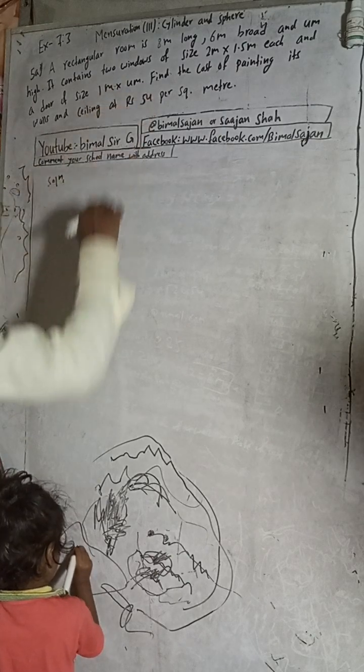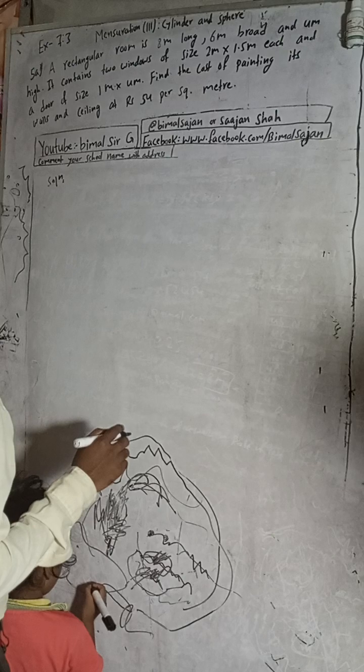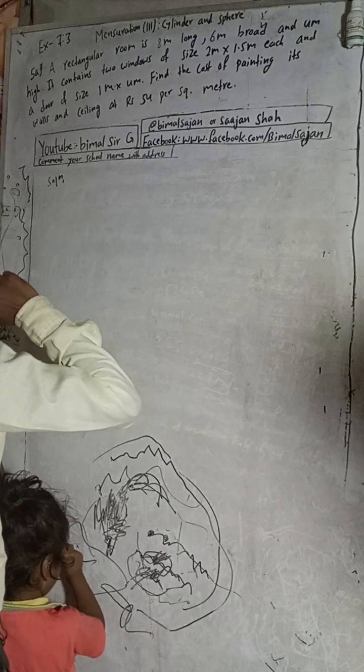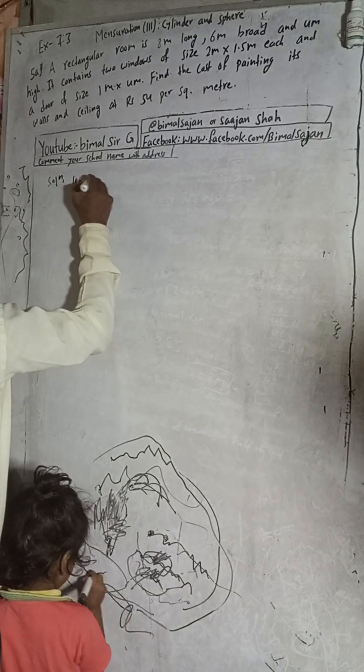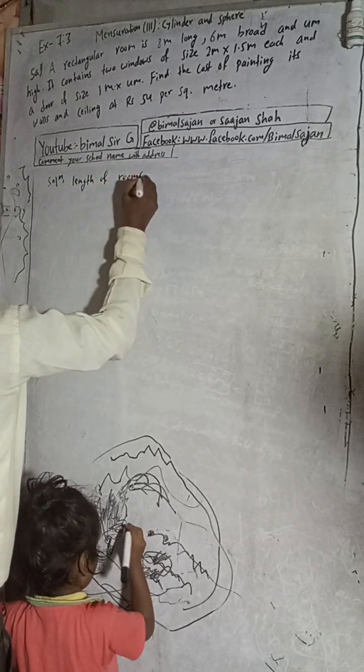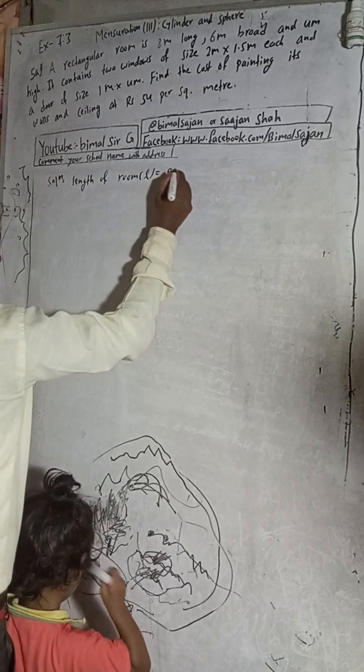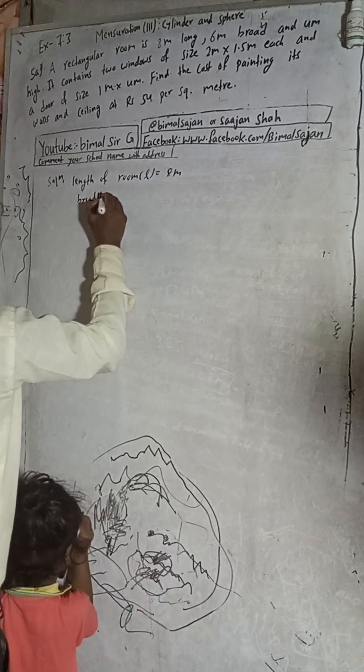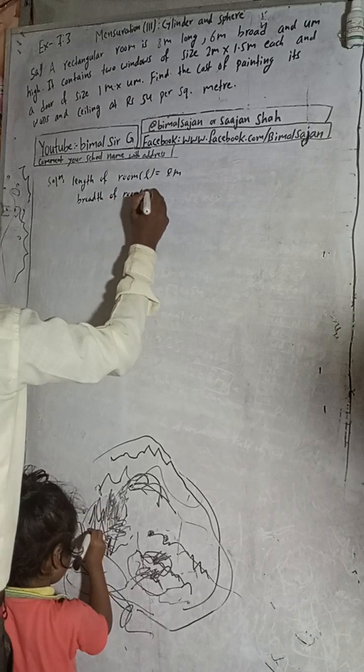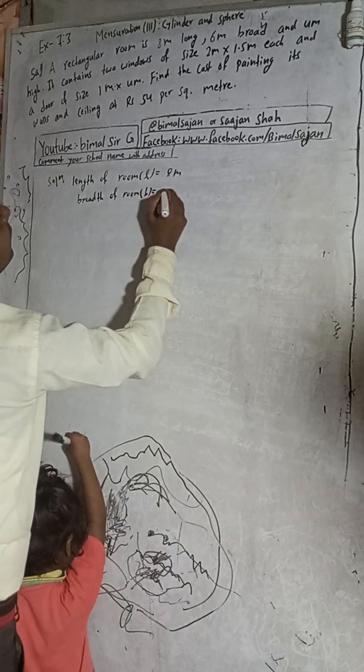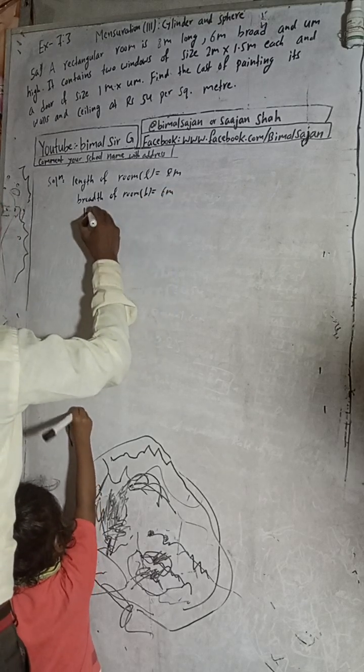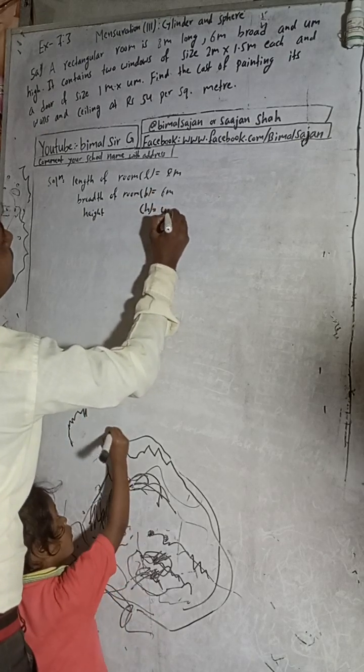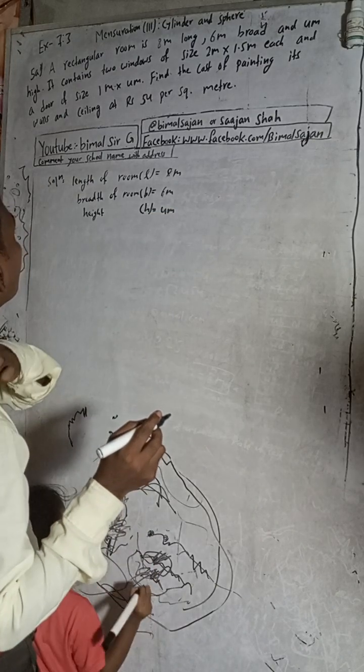A rectangular room is 8 meters long, 6 meters broad, and 4 meters high. It contains two windows of size 2 meters and 1.5 meters each, and a door. So length of room L is equal to 8 meters, breadth of room B is equal to 6 meters, and height H is equal to 4 meters.